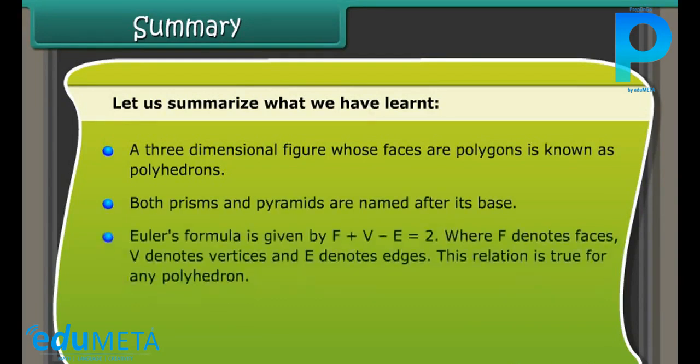Euler's formula is given by F + V - E = 2, where F denotes faces, V denotes vertices, and E denotes edges. This relation is true for any polyhedron.